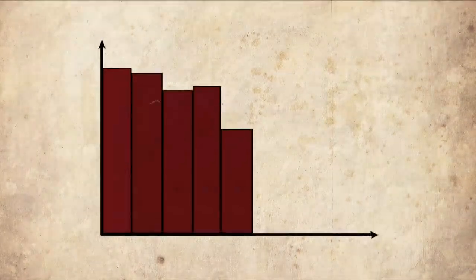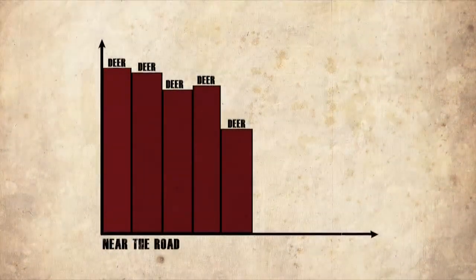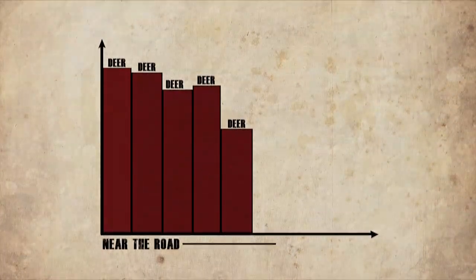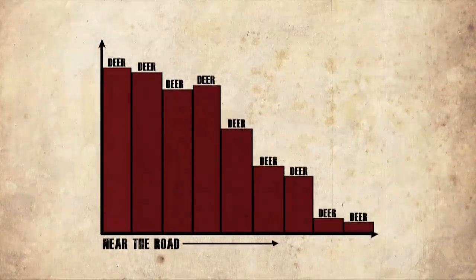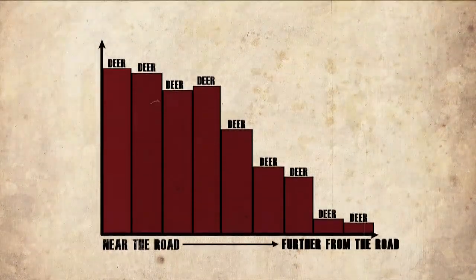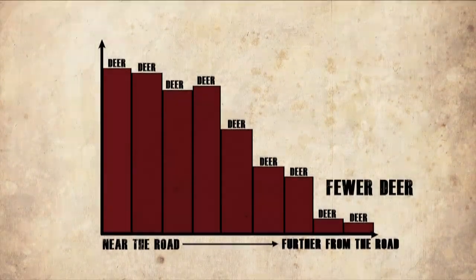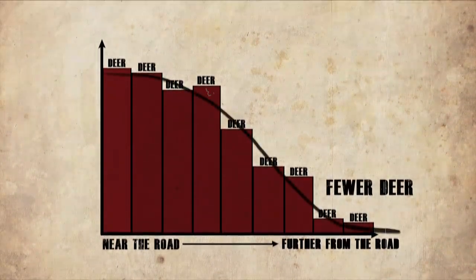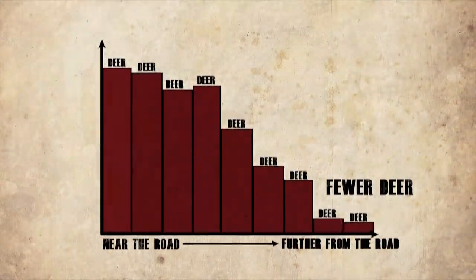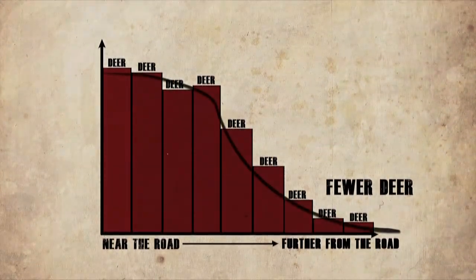That means most of the deer we count will be near the road, and as the deer get further away from the road, we'll count fewer deer. Knowing the exact shape of that graph helps to estimate the number of deer in the area.